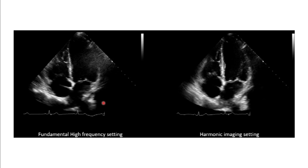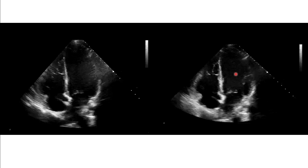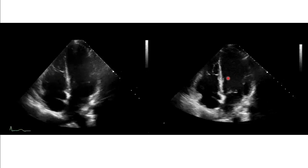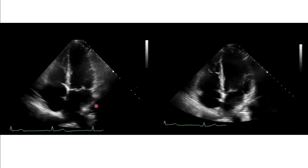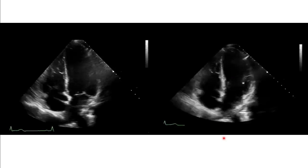The advantages of harmonic imaging are that we get clearer pictures. A static image comparison shows that without harmonic imaging we get the normal image, while with harmonic imaging we get more details of the valves — the structures are more clearly defined. This shows the difference between normal imaging and harmonic imaging.